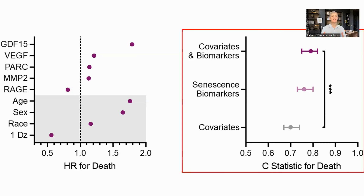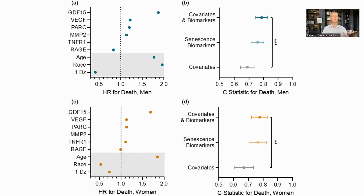This graph shows the C statistic for the clinical and demographic data — labeled covariates — at 0.7, the biomarkers on their own at 0.76, and the combination of clinical data and biomarkers together at 0.79. The authors also looked at the data by gender. Most of the markers were common, though RAGE and MMP2 were not predictive for females, and TNFR was not predictive for males. They wanted to subset the data by race as well, but the population was too homogenous to provide significant results.